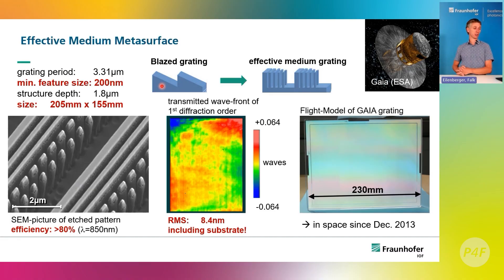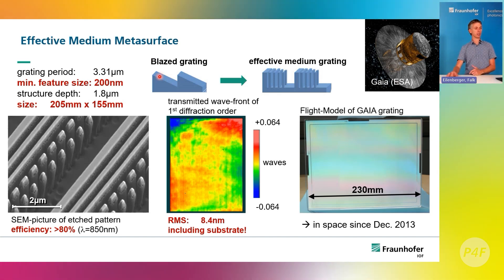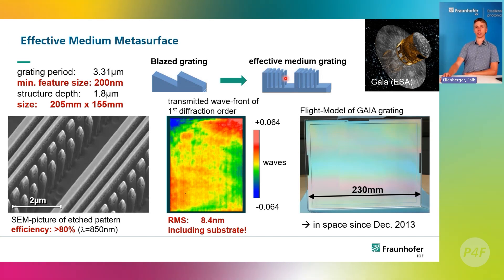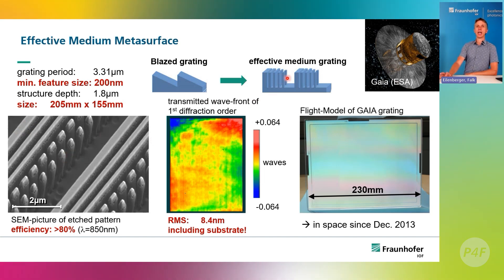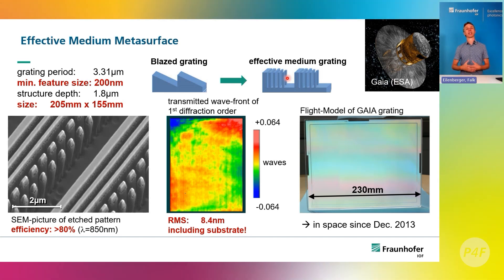Let's look at some application examples, starting historically with a simple one: gratings. Optical gratings disperse light according to wavelength. A typical grating has a unit cell with a blaze. What we created — actually done by my predecessors — is a metasurface that mimics such a blaze using a sub-wavelength structure of glass where the amount of glass changes across the unit cell. Light passing through sees only an average refractive index, so this works like a very efficient, low stray-light blazed grating.